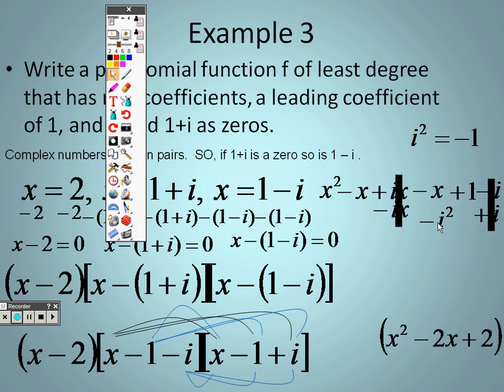And this is negative negative 1, which is positive 1. So really I have 1+1, which is 2. So when I do all of the foiling for this, I end up with x²-2x+2. But I still have this x-2 out in front.